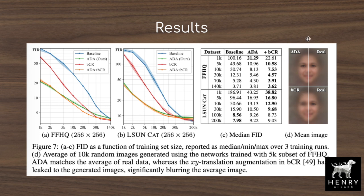An interesting visualization is the mean image — averaging out the mean image of the generator's data distribution and comparing it with the real distribution. The similarity between these two images is a compelling way to visualize what the GAN's generator has learned.